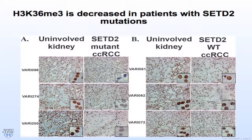One of the first things I wanted to do was look at patients with VHL mutations and PBRM1 mutations, and stratify them by SETD2 mutant versus SETD2 wild type. I optimized the IHC staining protocol for histone 3-lysine 36 trimethylation. Comparing the nuclear stain of uninvolved kidney to the SETD2 mutant tumor, you see a decrease in histone modification as predicted.